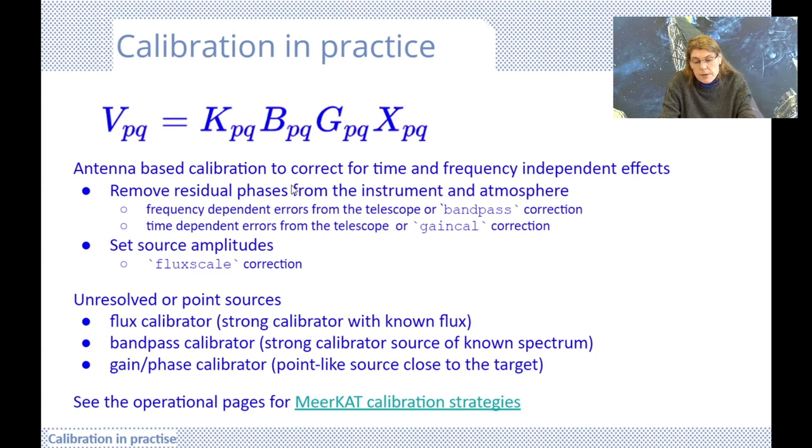Using observational data of representative calibrator sources, the calibration solution is computed as the relation between the observed visibility and some known visibility model for our calibrator. The calibration process starts with antenna-based calibration to correct for time and frequency independent effects. During the calibration process, the respective antenna-based calibration solutions are calculated for these known models, and the solution in the end is transferred to the science source before analysis.